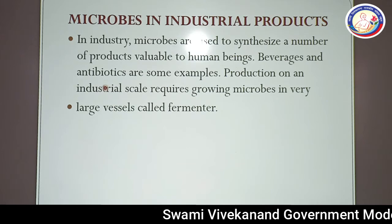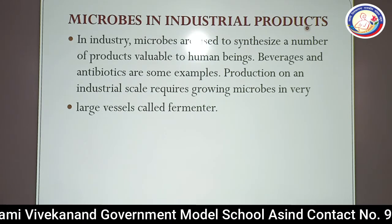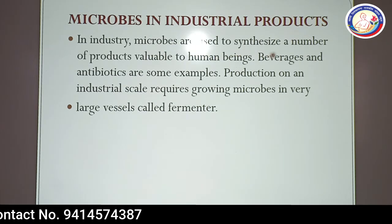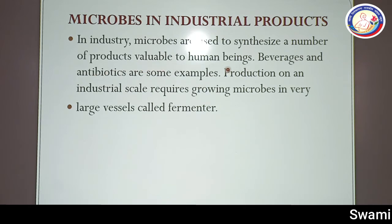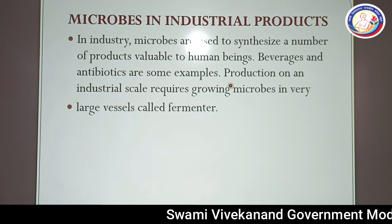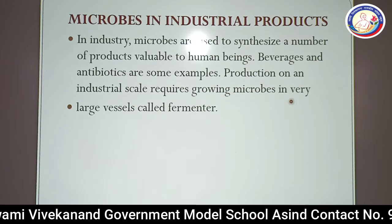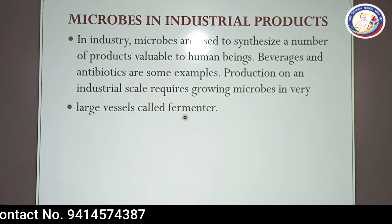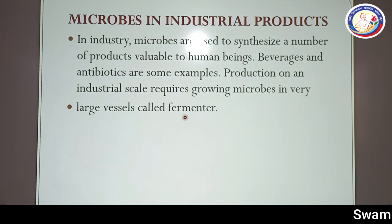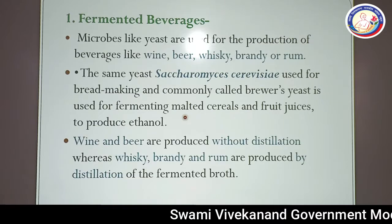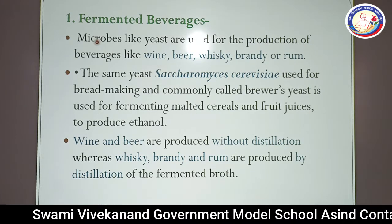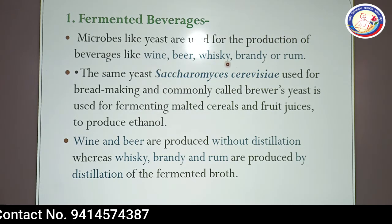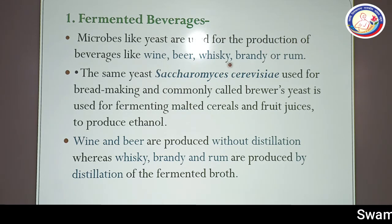Now we will start the second application of microbes: industrial products. Microbes are used to synthesize a number of products valuable to human beings. Beverages and antibiotics are some examples. Production on an industrial scale requires growing microbes in a very large vessel called a fermenter (also called a bioreactor). The first industrial product is fermented beverages — microbes like yeast are used for production of wine, beer, whiskey, brandy, rum, etc.